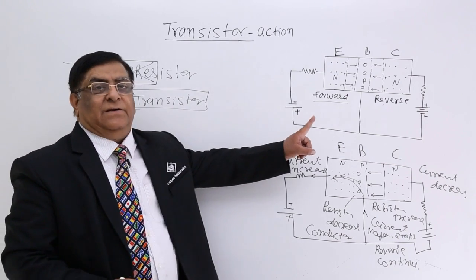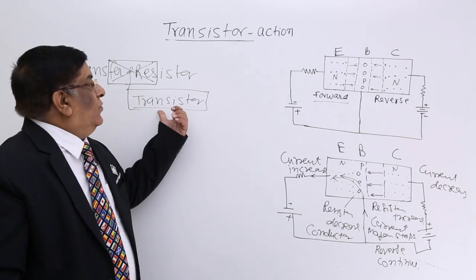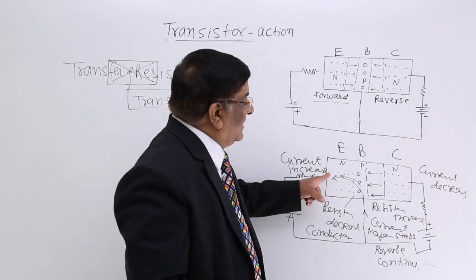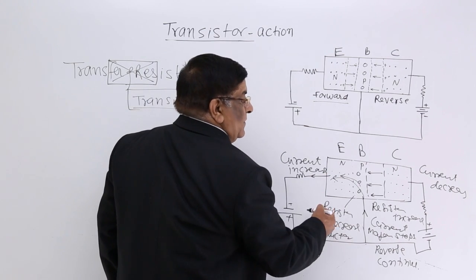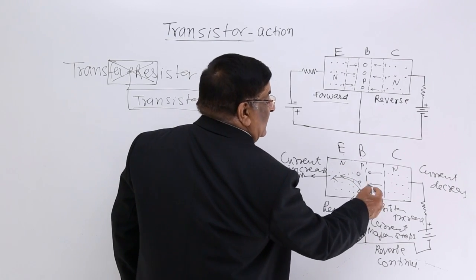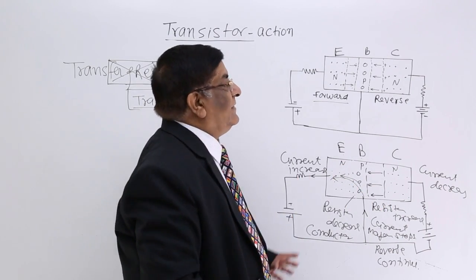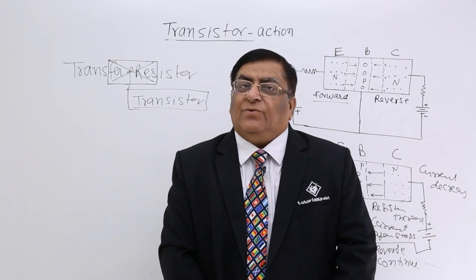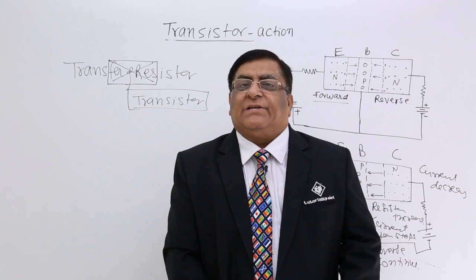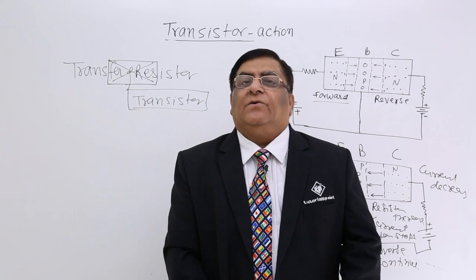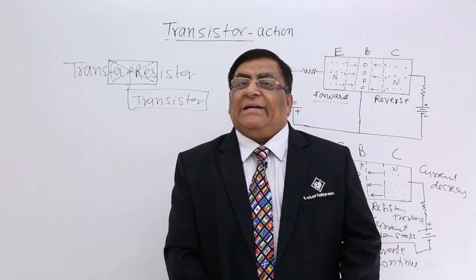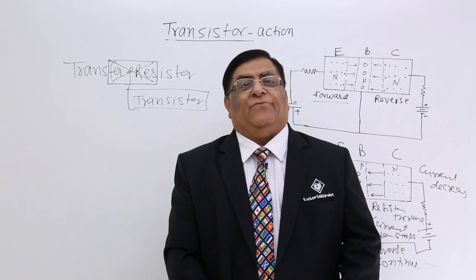That is why it is called a transistor — because when biasing is done, there is a transfer of resistance. This is the transistor action: here the current flows freely from base to emitter, and here it is restricted. This is transistor action.